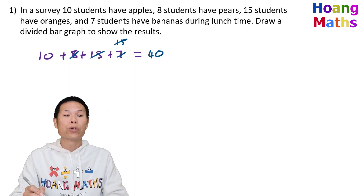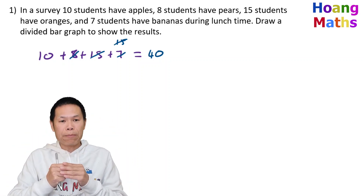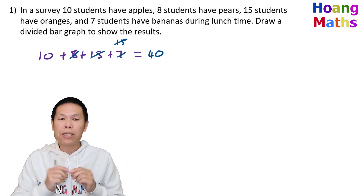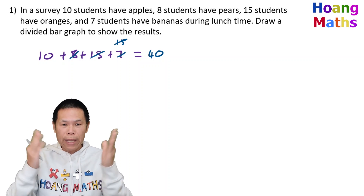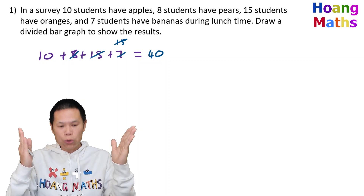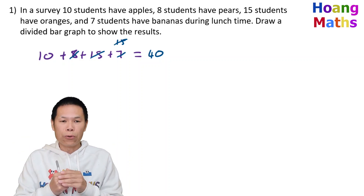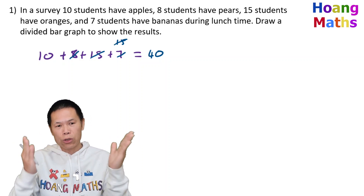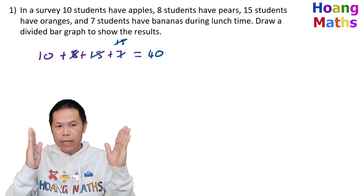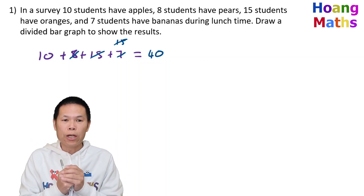To draw this divided bar graph, it would be easiest if we draw 40 centimeters so each centimeter represents each student, but in real life we don't have enough space. So what we can do is draw it at 20 centimeters — that's doable. Of course, you can also do 15 or 12 and so on, but 20 centimeters is easier because there are fewer decimals to deal with. The process is the same.